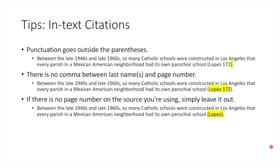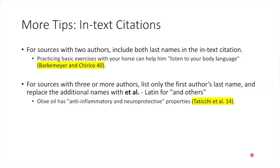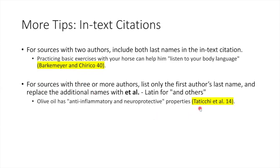A few tips on in-text citations. First, as you already saw in the example, punctuation goes outside the parentheses. Next, there is no comma between the last name of the author and the page number. Finally, if there is no page number on the source you're using, you would simply leave out that element of the citation and just include the author's last name. You'll often come across sources with multiple authors, especially if you're using scholarly journal articles. For sources with two authors, include both last names in the in-text citation and the word 'and' between them. For sources with three or more authors, list only the first author's name and replace the additional names with 'et al.,' which means 'and others.'